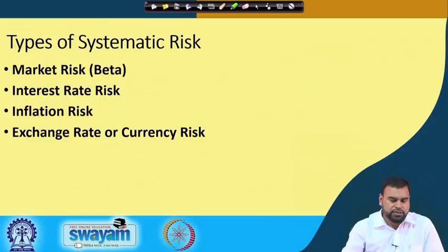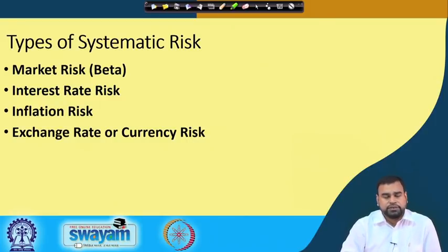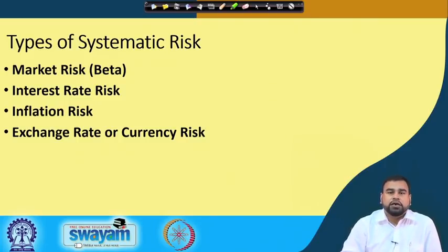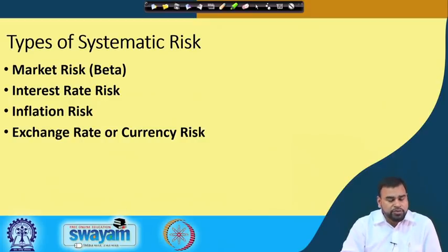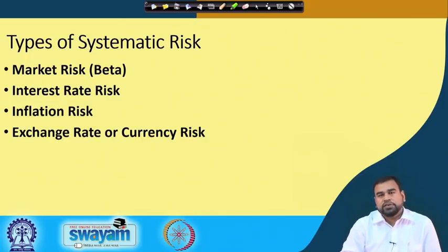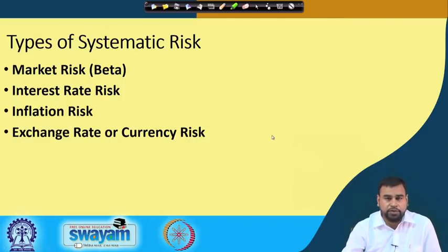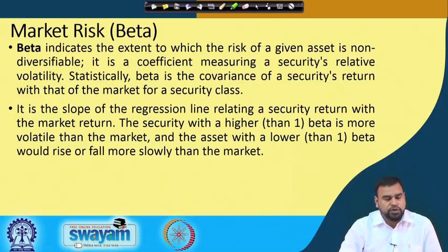Let us discuss the different types of systematic risk that we face in the market. The first one is market risk, defined as beta. Another one is interest rate risk, inflation risk, and exchange rate or currency risk. These are the major risks driven by changes in macroeconomic fundamentals, and because of these changes, every market participant is exposed to this type of risk.